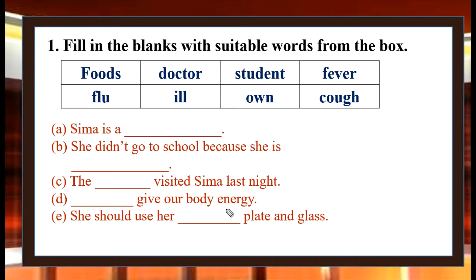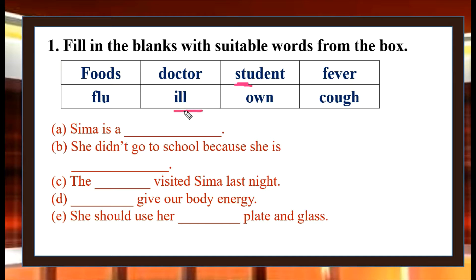Number 1: Shima is a student. Number 2: She didn't go to school. Number 3: She didn't go to school because she is ill.